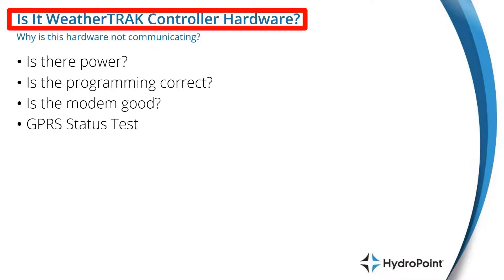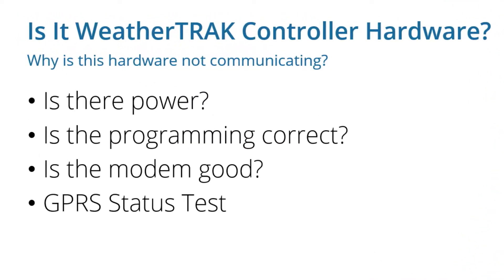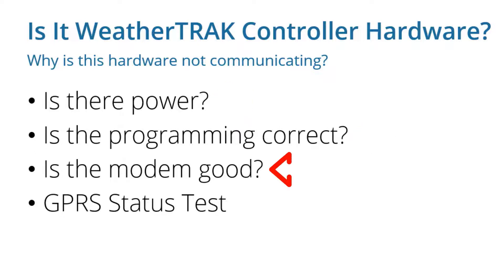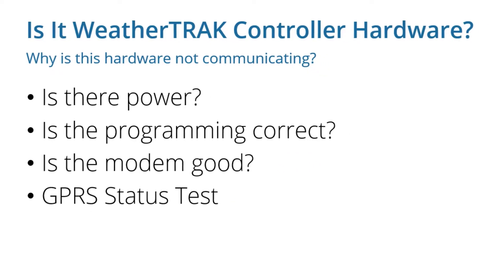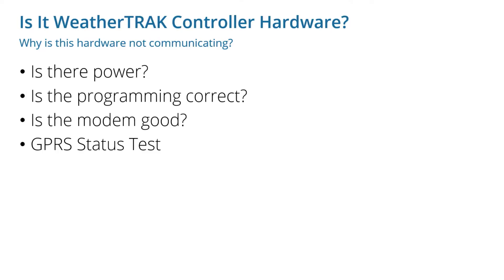When examining whether it's the WeatherTrack controller hardware that's at the heart of your communication issue, we want to diagnose, first of all, if there's a power issue; second, if the programming is correct; then see if the modem you have is current and good; and finally, be able to reset the modem with the GPRS status test.